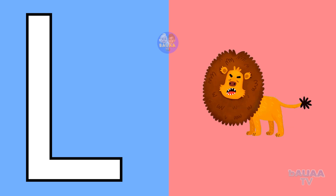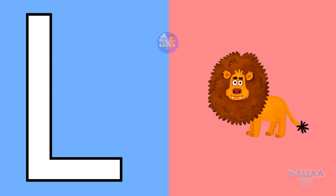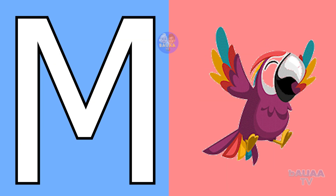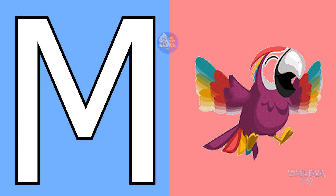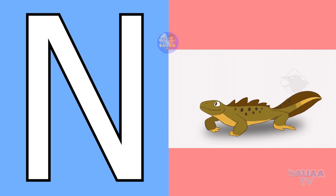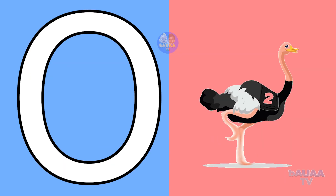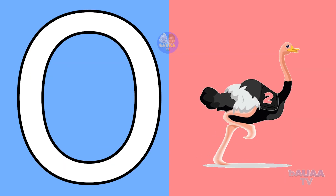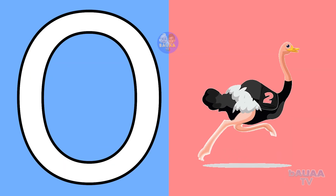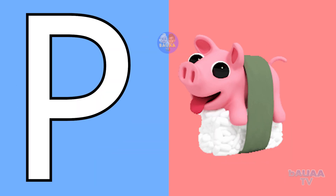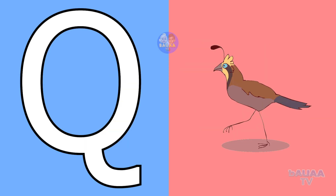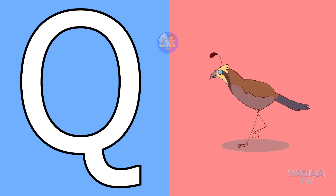L for lion, M for macaw, N for newt, O for ostrich, P for pig, Q for quail.